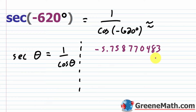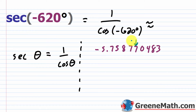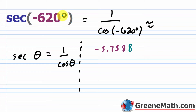Rounding to the nearest ten-thousandth: we have the tenths, hundredths, thousandths, and ten-thousandths. The digit that follows is 7, which is five or greater, so we add 1 to the 7, making it 8, and cut off the remaining digits. The secant of negative 620 degrees is approximately negative 5.7588.